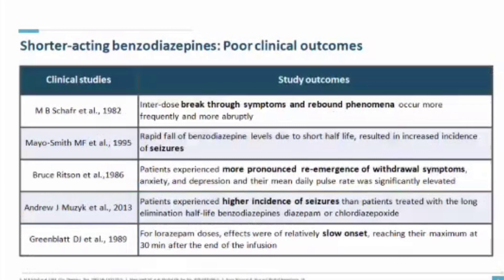Shorter-acting benzodiazepines have poor clinical outcomes. Multiple studies from 1982 to 2013 show that inter-dose breakthrough symptoms and rebound phenomena occur more frequently with shorter-acting benzodiazepines. A 1995 study showed rapid fall of benzodiazepine levels due to shorter half-life resulted in increased seizure incidence. A 1986 study found patients experienced more pronounced re-emergence of withdrawal syndrome, anxiety, and depression, with significantly elevated mean daily pulse rate. A 2013 study found higher seizure incidence with longer elimination half-life benzodiazepines, and lorazepam doses showed relatively slow onset, reaching maximum effect 30 minutes after infusion.